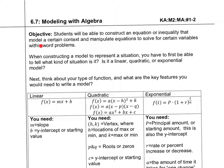Okay, objectives: students will be able to construct an equation or inequality that models a certain context, and manipulate equations to solve for certain variables within word problems. When constructing a model to represent a situation, you first have to be able to tell what kind of situation it is — either linear, quadratic, or exponential. When we see a word problem, we have to determine which one it is, and there are some key words we're going to look for.